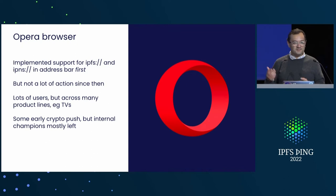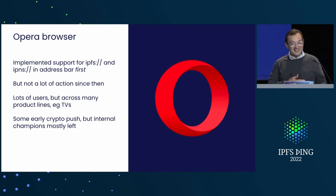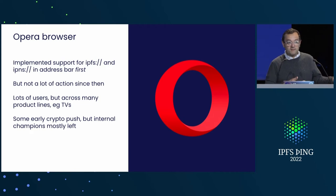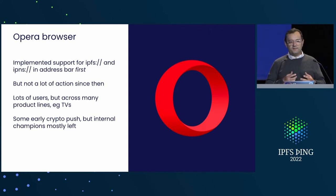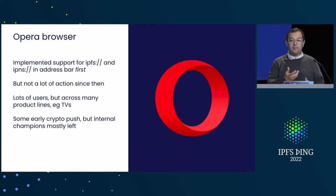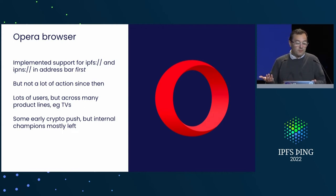Opera Browser was the first major browser — they say they have about 250 million users worldwide. Most of their users are in other places like televisions and appliances, or Opera Mini on smart feature phones. They shipped IPFS and IPNS scheme support, where it redirected to a remote gateway at dweb.link, before anybody else did — across their iOS, Android, and desktop browsers. The company has since been bought by an investment conglomerate, and a lot of the dweb champions have moved on to other companies. Things have definitely slowed down.